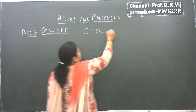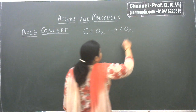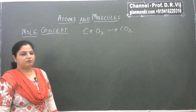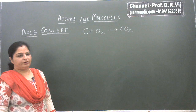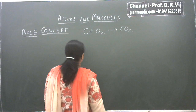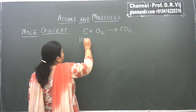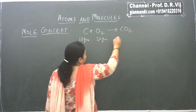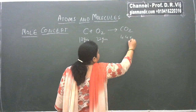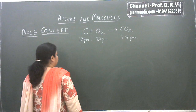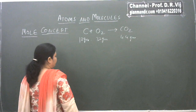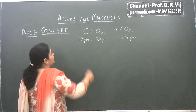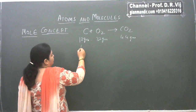Carbon reacts with oxygen to form carbon dioxide, and we can find a quantitative relationship between the amounts of reactants and products in various ways. For example, 12 gram of carbon reacts with 32 gram of oxygen to form 44 gram of carbon dioxide. There is another way which is found to be more convenient rather than expressing in terms of masses, and that is we can use the number of particles.